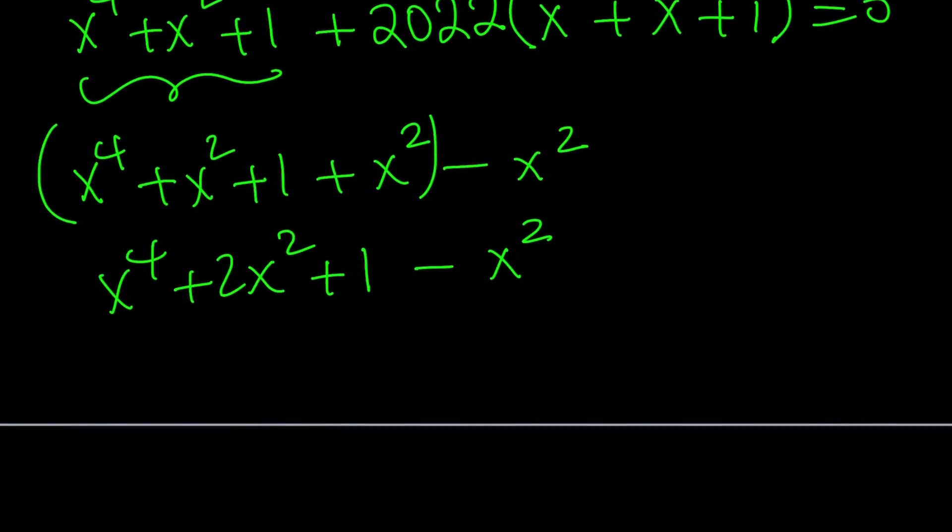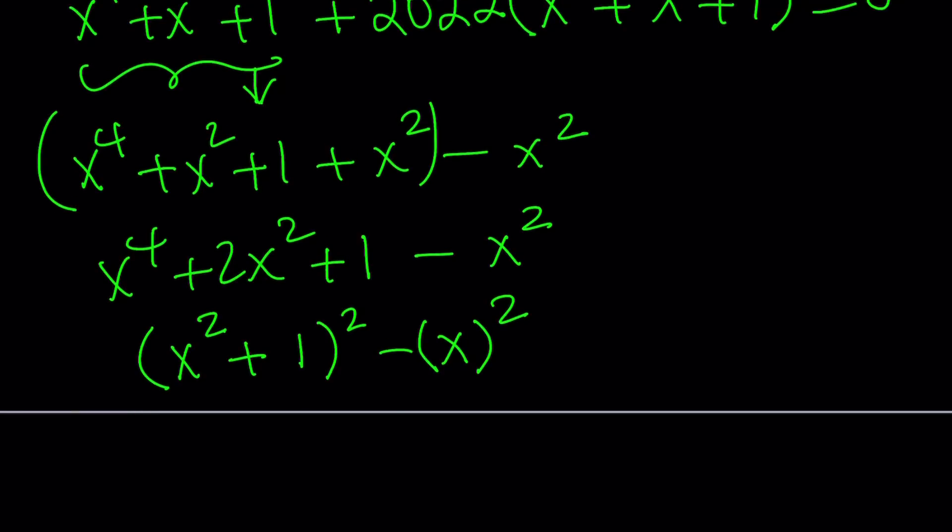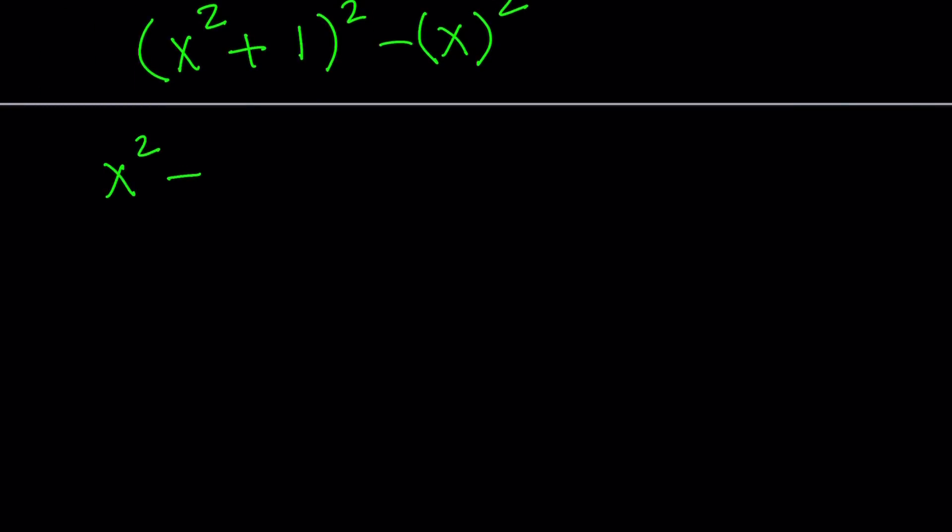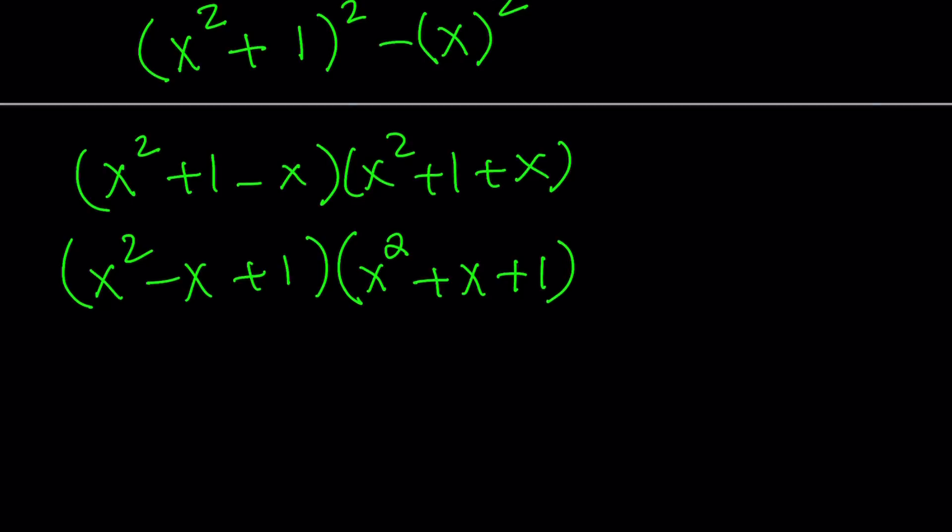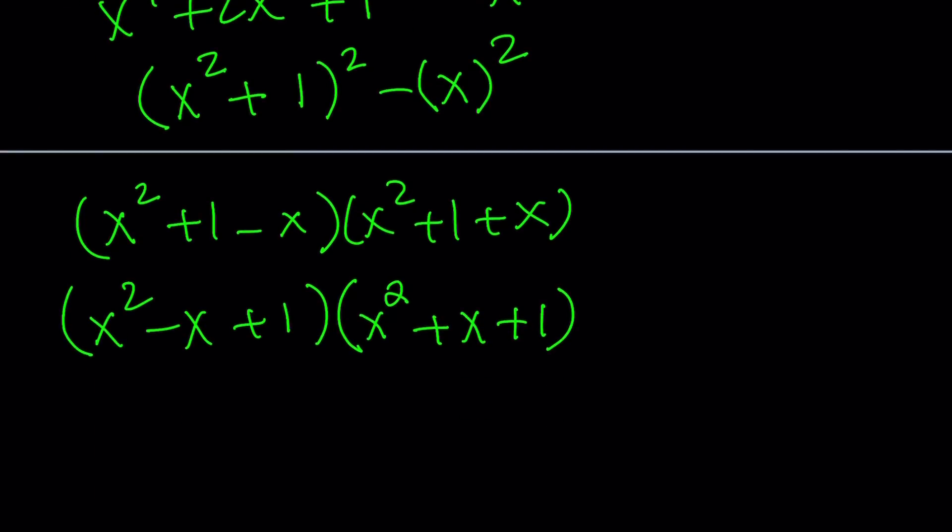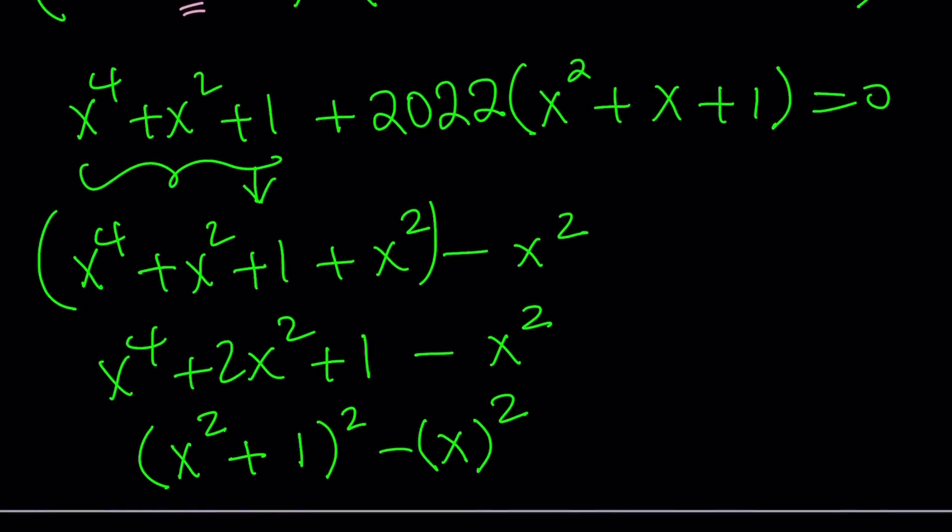Let's write this as a perfect square now. x to the 4th plus 2x squared plus 1 can be written as x squared plus 1 quantity squared, and x squared is obviously just x squared. Now this is a difference of two squares. This can be factored into two factors: x squared plus 1 minus x and x squared plus 1 plus x. Let's rearrange this. Let's write it as x squared minus x plus 1. It's always important to write polynomials in standard form. Now let's add the second piece to it, which is 2022 times x squared plus x plus 1.